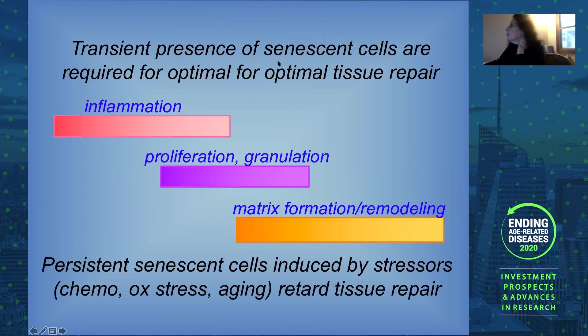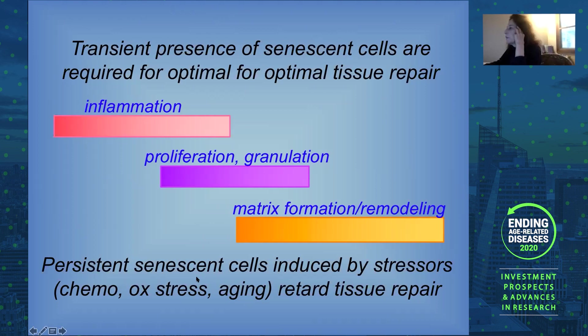What we have learned is that senescent cells can be good. When they're good, they tend to be transiently present — they are cleared by the immune system — and under those conditions we have optimal embryogenesis, optimal tissue repair, and homeostasis. But when they persist, which is what happens during aging, they become deleterious — maladaptive — and begin to drive those phenotypes and pathologies that we associate with aging.